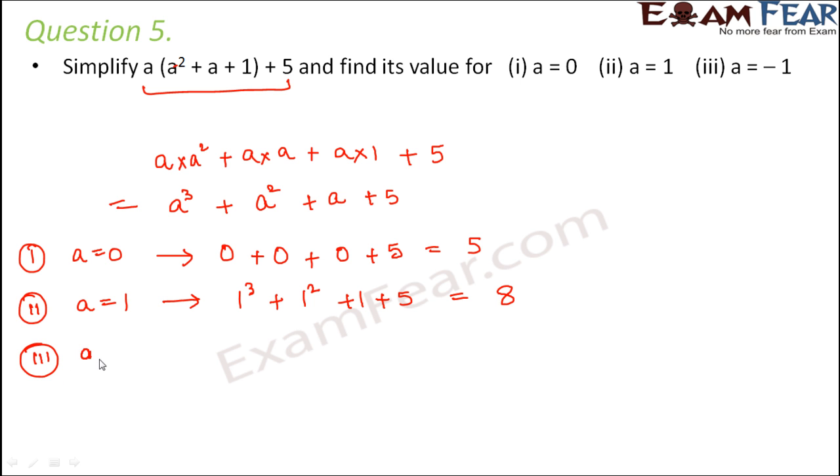In the third case, where a = -1, this would become (-1)³ + (-1)² + (-1) + 5. So this would be equal to -1 + 1 - 1 + 5. So -1 + 1 will be 0, so 5 - 1 would be 4. So you see, the value of this expression is 5, 8, and 4 respectively for values of a = 0, 1, and -1.